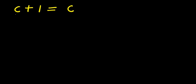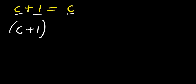How to solve √(c+1) = √c. We are going to start by taking the squares of both parts of this equation: (c+1)² equals c².